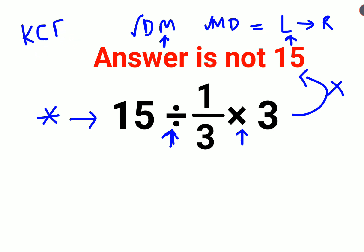So now when you have division, you will always follow the rule of KCF. What does KCF mean? K stands for keeping the first number as it is. C stands for changing the division sign to multiplication. And F stands for flipping or taking the reciprocal of 1/3, that is 3. And then we will keep the rest as it is.